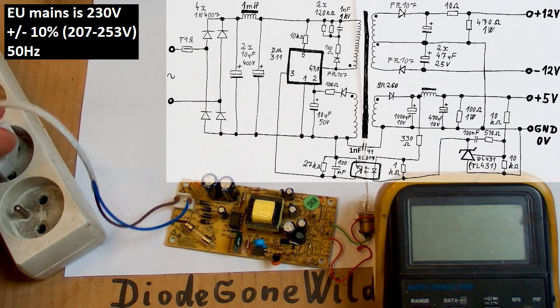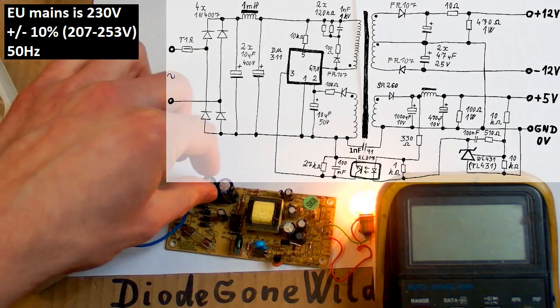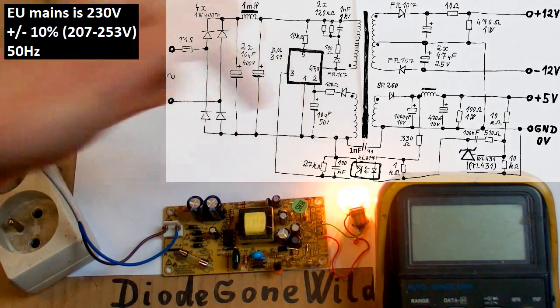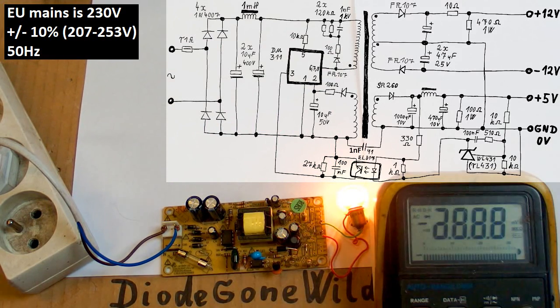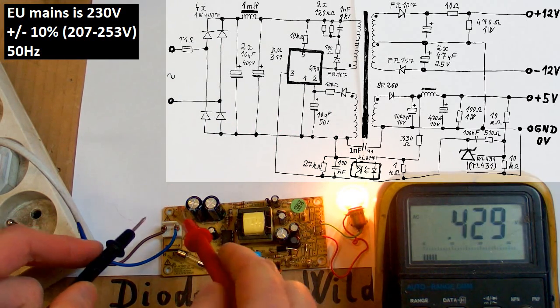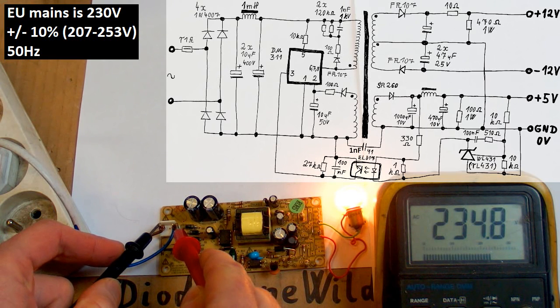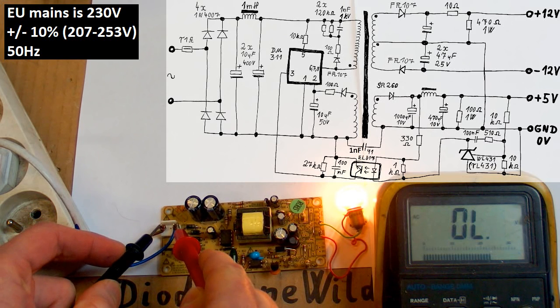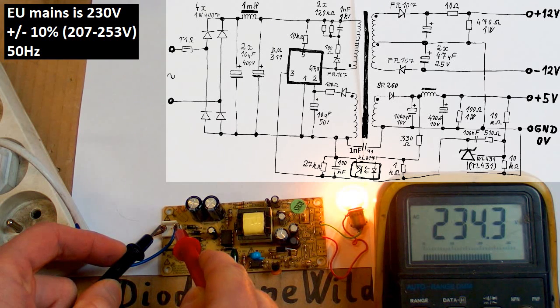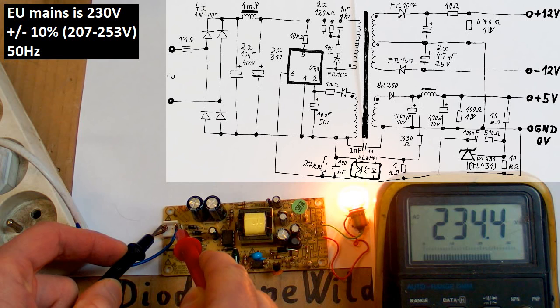So let's plug it in. I have a tungsten lamp here as a load. Now let's set my multimeter to AC volts and measure the mains first. The mains voltage is 234 volts. The nominal European mains should be 230, so it's very close because the tolerance is plus minus 10 percent.